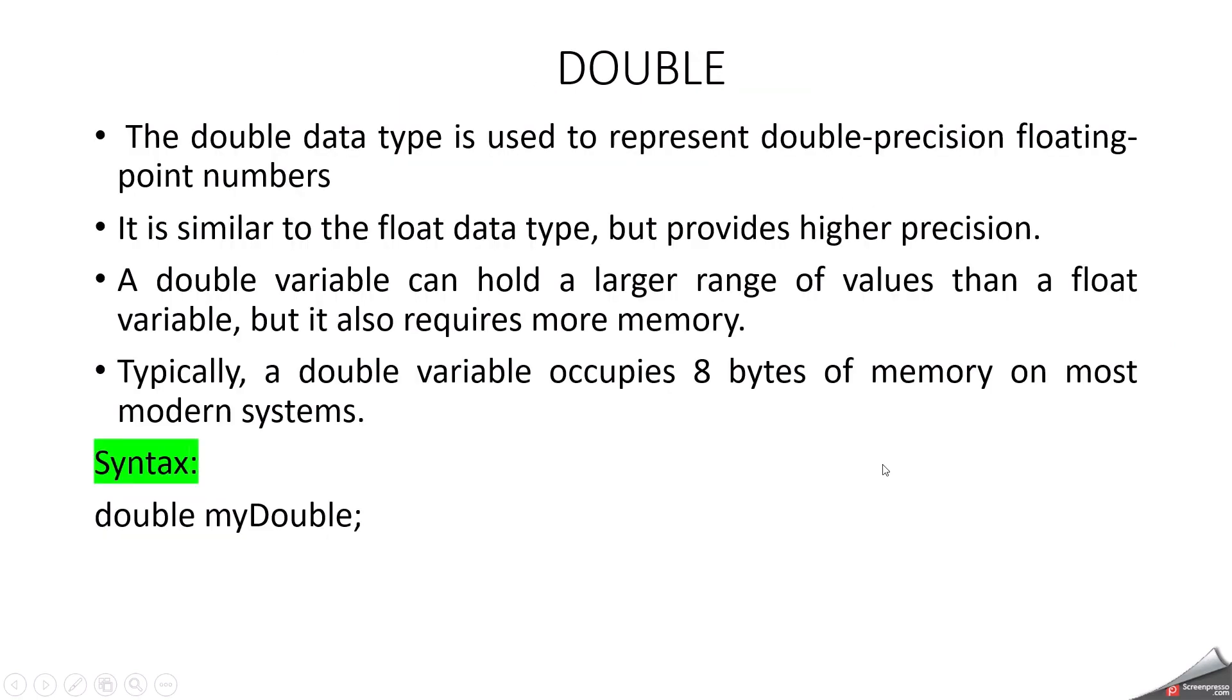Double. The double data type is used to represent double precision floating point numbers. Double precision means is more precise and for storing large numbers we prefer double over float. In real time scenario where we will use double? For example to store the annual salary of a CEO of a company, then for more accurate choice we can choose double. And like trigonometric functions like sin theta or cos or tan, mathematical functions like square, those all return double values. It's similar to the float data type but it provides higher precision. And it can hold a large range of values than a float variable. At the same time it also requires more memory.